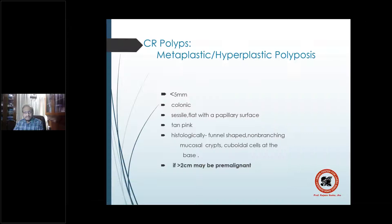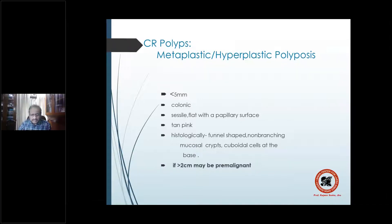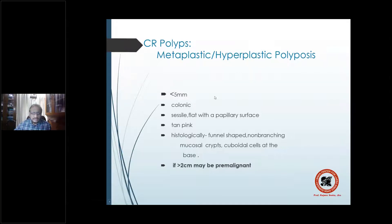Metaplastic or hyperplastic polyps, comprising 20% of polyps, are always less than about 5 mm, usually in the colon rather than the rectum. They are sessile and flat with a papillary surface, typically tan colored. Histologically, they show funnel-shaped non-branching mucosal crypts with cuboidal cells at the base. If they are more than 2 cm they may be pre-malignant, but this is a very rare occurrence.